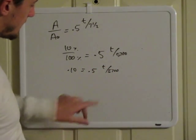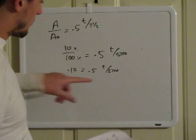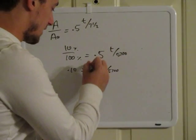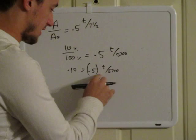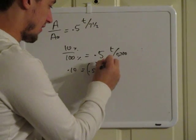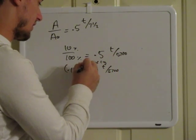Now to bring this down, because this is an exponent, you have to take the log of both sides. So you're going to take the log of this—log or natural log, it doesn't matter—and the log of this.